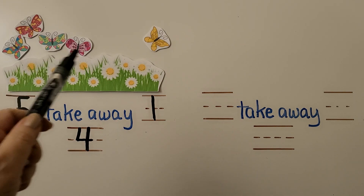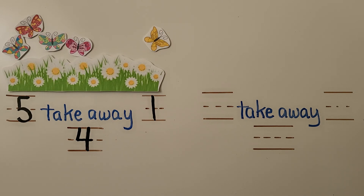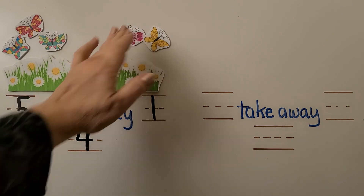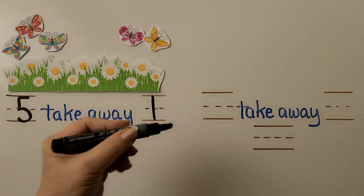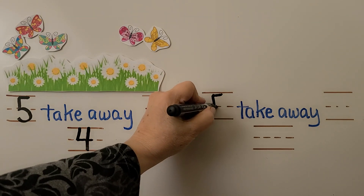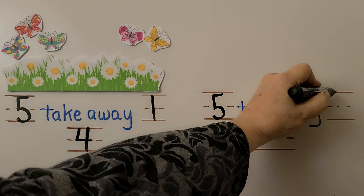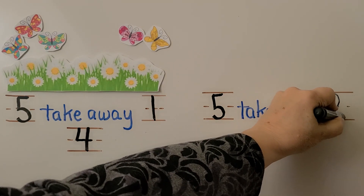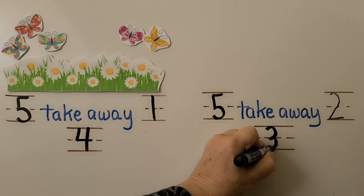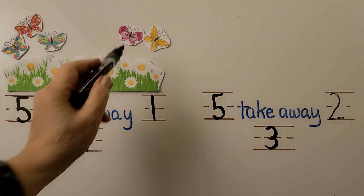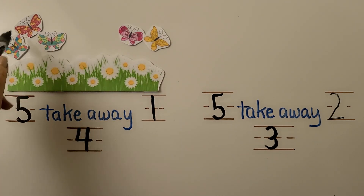Now, what if two butterflies leave? What if two butterflies leave the garden? How many butterflies would be left in the garden? There were one, two, three, four, five in all. We can write the five. We take away two — we can write the two. We count how many are still left: one, two, three. We can write the three. When we have five butterflies and we take away two, there are three left in the garden.